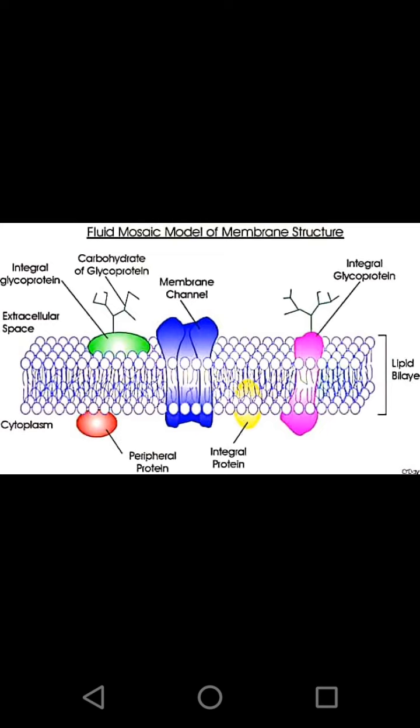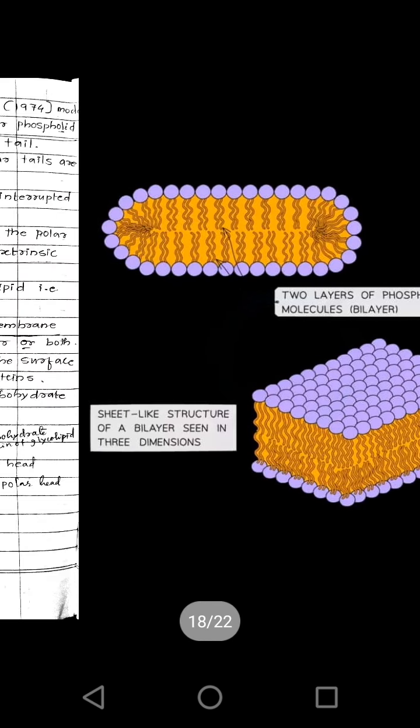These are some important components of the plasma membrane. We also see chains of carbohydrates attached to these proteins — those are called glycoproteins. If the carbohydrate chains are attached to the lipid layer, they are called glycolipids.